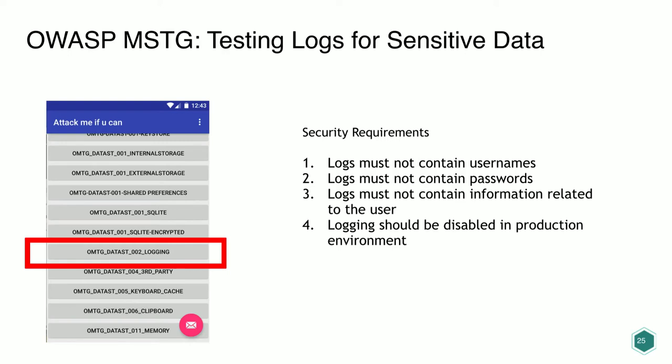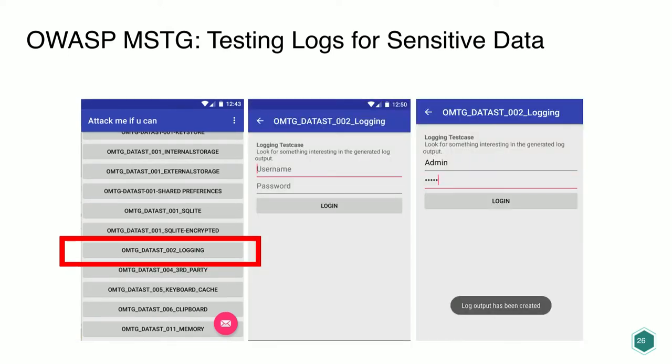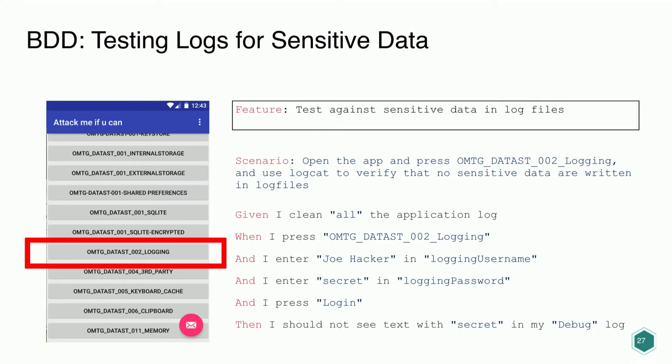For example, to test logs for sensitive data, our security requirements would be: logs must not contain username or password, no PII, and logging should be disabled in a banking app. The flaw we want to automate: we click a button, insert username and password, click login — the app then writes a message in the log files containing those credentials. Our BDD feature covers testing against sensitive data in log files. The scenario: open the app, press the button related to log files, and check that no sensitive data is written.